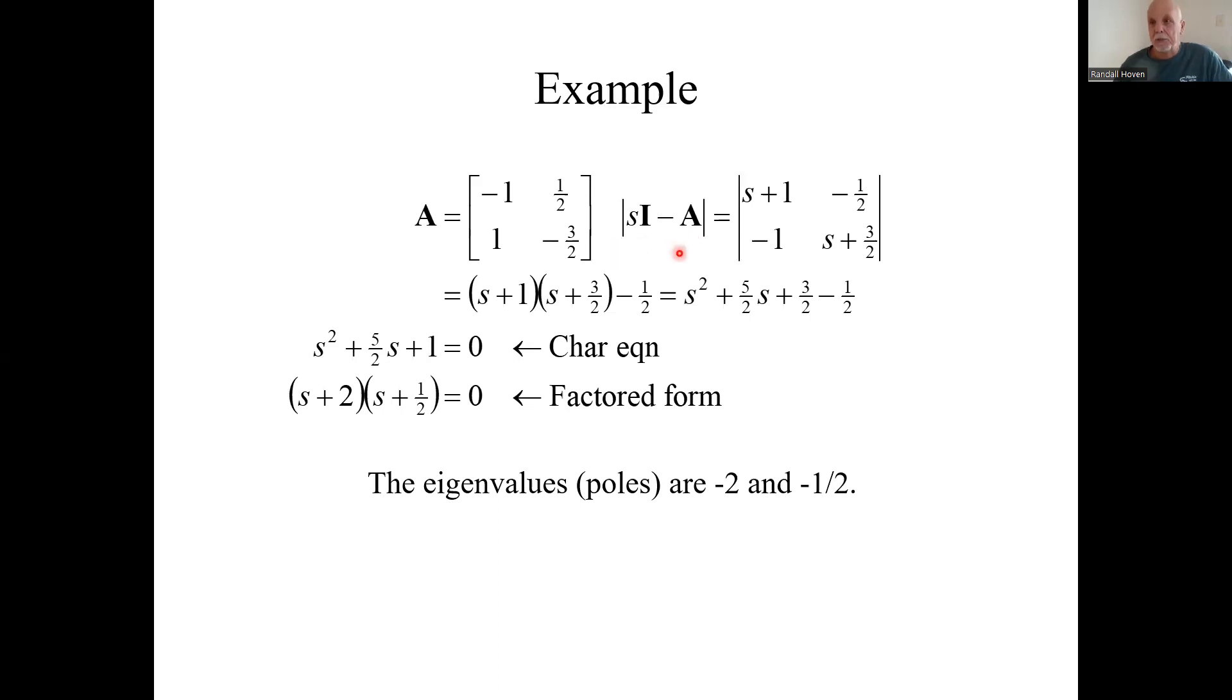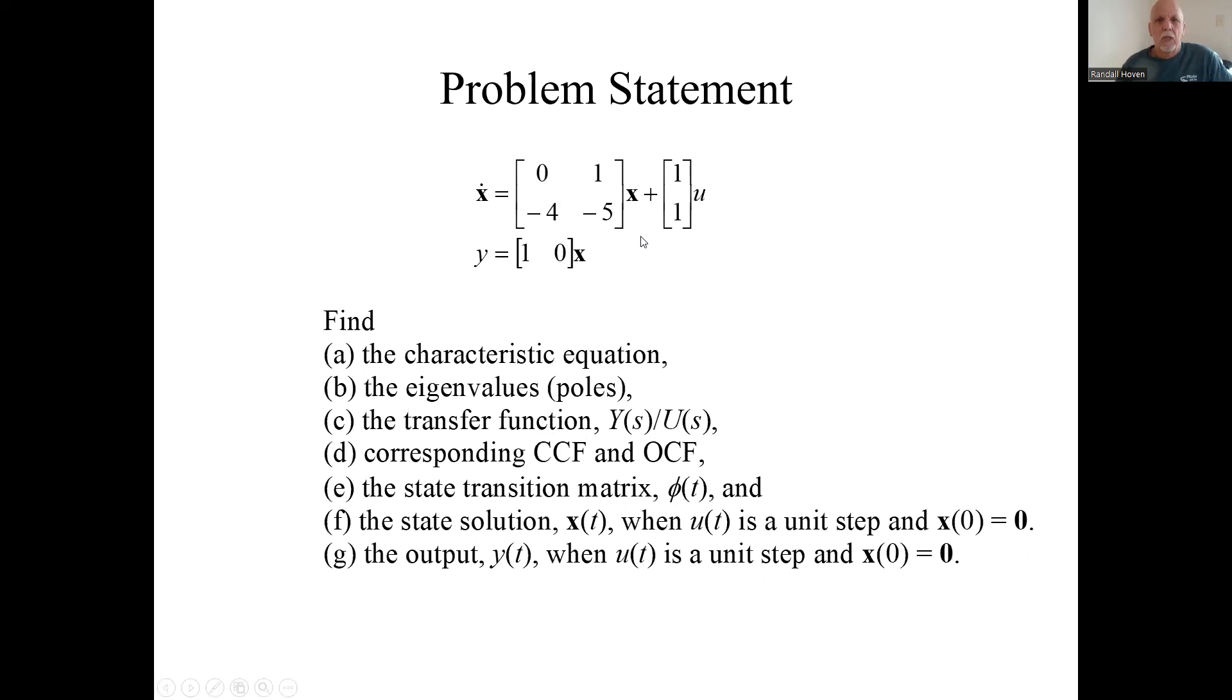We're going to have to do some determinants and inverses. I'll save this for another video, but start with a system in state space format. Here's all the things we can do. We can find the characteristic equation, and from there, the eigenvalues or poles, transfer function, corresponding control canonical form and observer canonical form, the state transition matrix, the solution to the state given a certain input when the initial condition is zero, or the output itself. All those things. We'll go through all that in a subsequent video. But it's quite a bit you can learn from that original state space format.